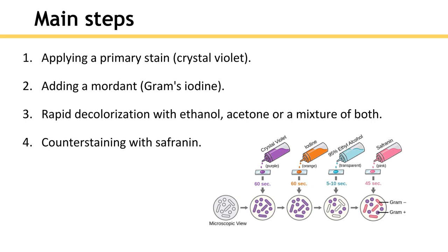The mordant is Gram's iodine, which binds to the crystal violet making a large complex that adheres to the cell membrane. The final step in gram staining is to use a basic counter stain to give decolorized gram negative bacteria a pink color for easier identification — this is known as the counter stain.